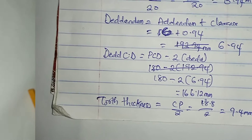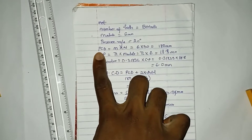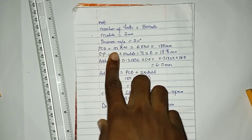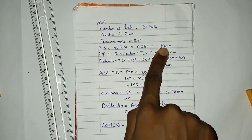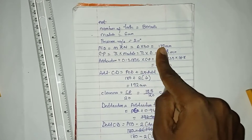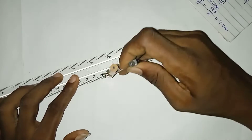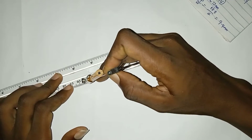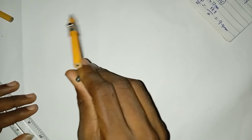With all these parameters we can draw. The first thing we'll draw is our pitch circle diameter, which is 180 millimeters. Since this is the diameter, we need the radius: 180 divided by 2 gives us 90 millimeters. So we'll use 90 millimeters as the radius. I'll measure 9 centimeters and place it on my drawing sheet, then draw a circle.